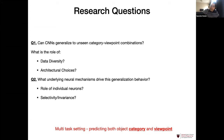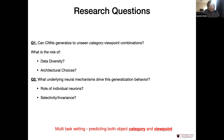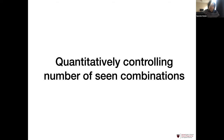Just as a quick reminder, it's always a multitask setting. We're not trying to solve just category prediction. We're doing a multitask setting where the task is to predict both category and the viewpoint of the object. Since a lot of these ideas revolve around controlling data diversity — the number of category-viewpoint combinations shown to the network — the first question is: how do we quantitatively control the number of combinations that a network sees during training?